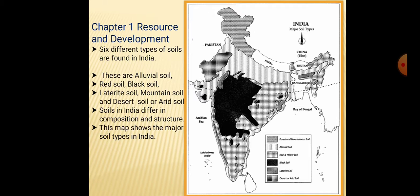There are 6 different types of soil found in India. These are alluvial soil, red soil, black soil, laterite soil, mountain soil and desert soil or arid soil.